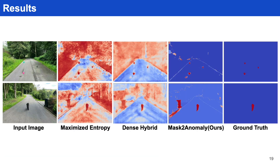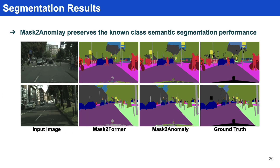Coming to the qualitative results, we can see Mask2Anomaly has better localization of anomalies and also reduced false positives. We can also see that Mask2Anomaly preserves the known-class semantic segmentation performance, showing that while learning anomaly segmentation it does not forget the known-class performance, and it shows on-par segmentation performance with Mask2Former.